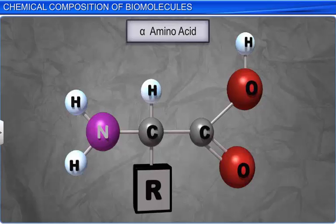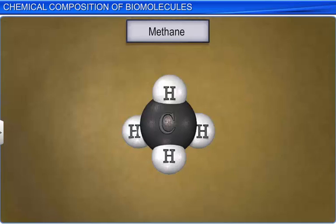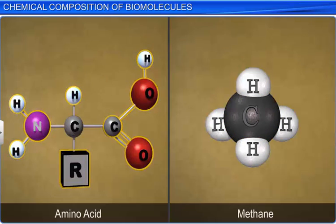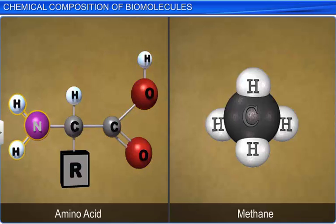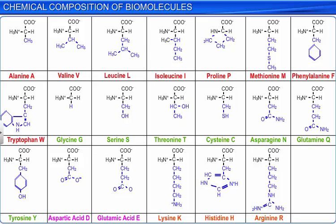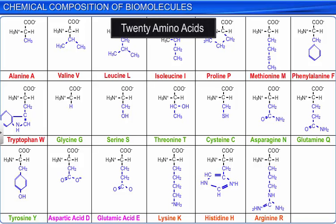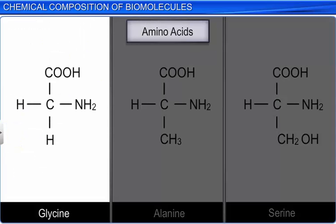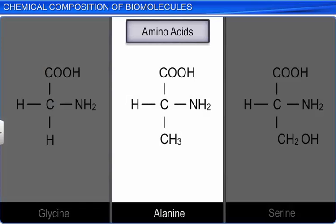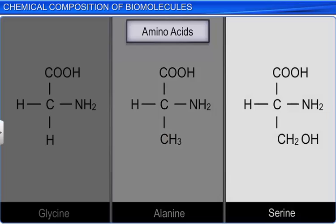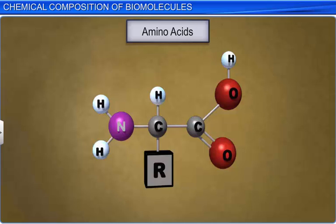Amino acids are substituted methanes with four substituent groups occupying the four valency positions. These groups are hydrogen, the carboxyl group, the amino group, and a variable group also known as the R group. Based on the nature of the R group, there are many amino acids; however, there are 20 standard amino acids in proteins. For example, glycine, in which the R group is hydrogen; alanine, where the R group is a methyl group; and serine, where the R group is a hydroxymethyl group. The chemical and physical properties of amino acids are essentially those of the amino, carboxyl, and R functional groups.